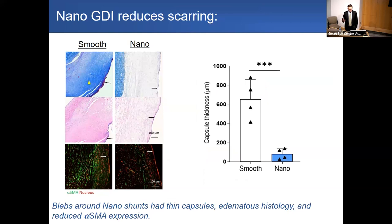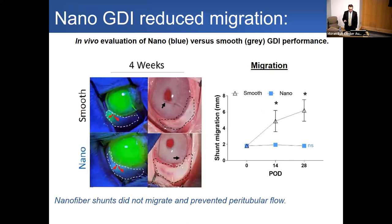Blebs around nanofiber shunts had a thin external outer capsule and healthy edematous appearance with low SMA expression, while blebs around smooth shunts had thick organized capsules and high SMA expression. A thick capsule is generally impermeable to fluid and associated with surgical failure, suggesting the nanosurface shunts had a much more favorable appearance. Additionally, the smooth shunts migrated within their entry tracks with significant peritubular flow — fluid going around rather than through the tube — and at four weeks, there was almost complete migration of smooth shunts into the anterior chamber, while nano shunts remained stably localized.